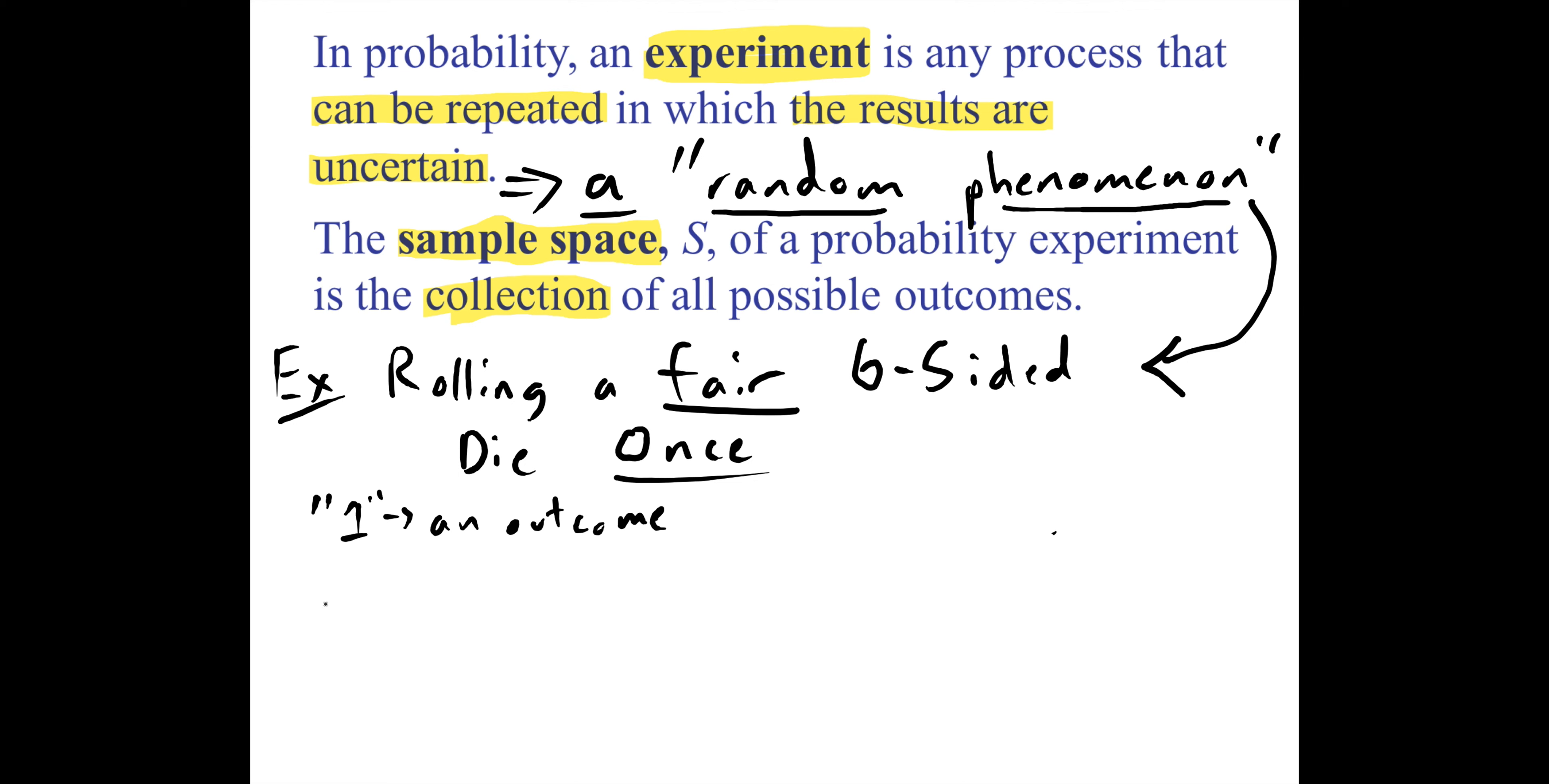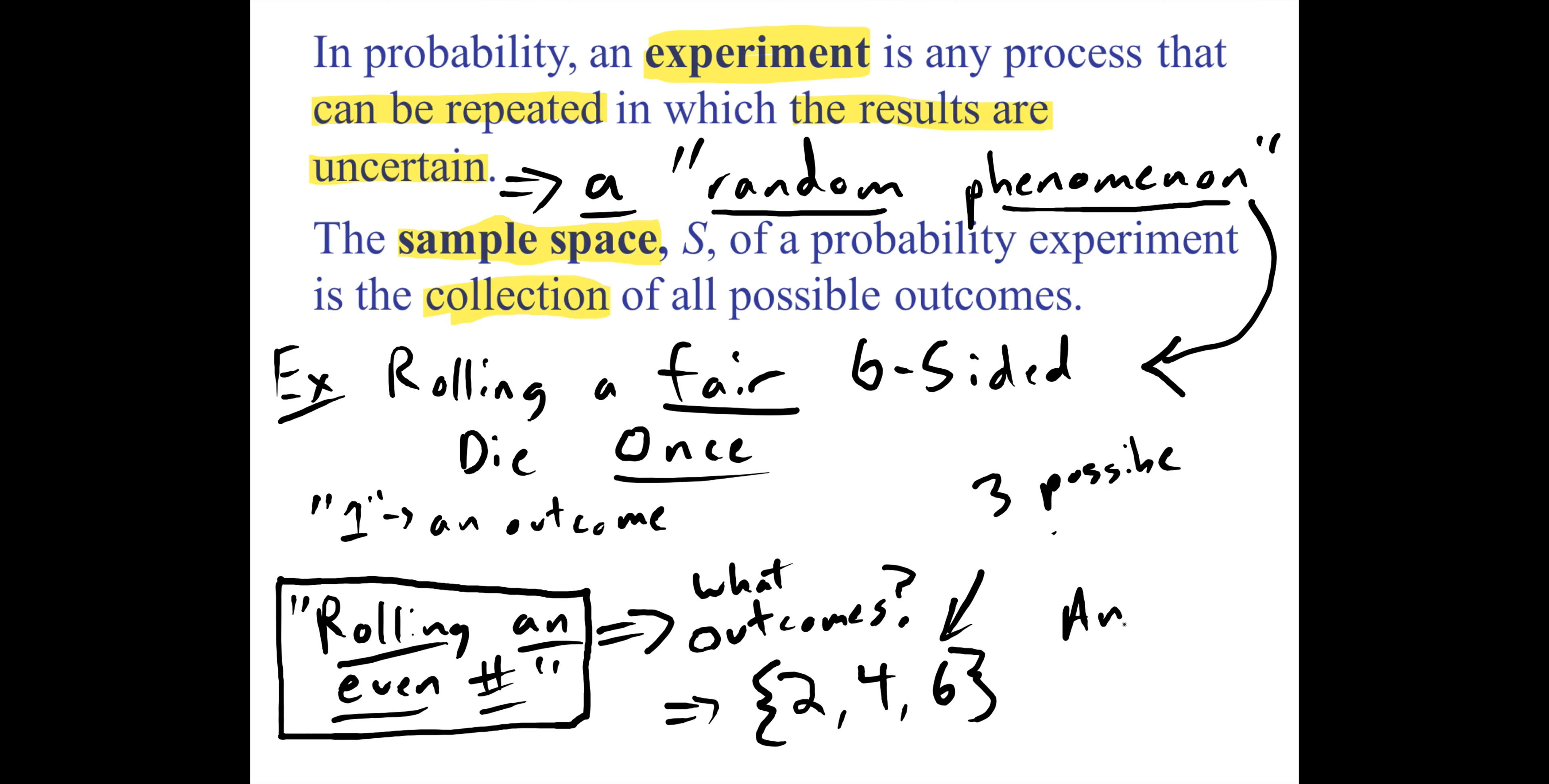There's another type of idea with probability, which is something like I might want to think about rolling an even number. What outcomes are in that? What's interesting about an idea like this is that there is more than one way you could roll an even number. You could roll two, four, and six—these are even numbers. This little collection here with three possible outcomes we call this an event.